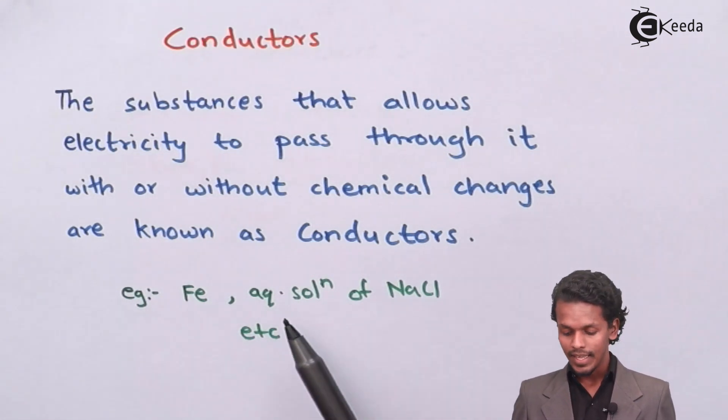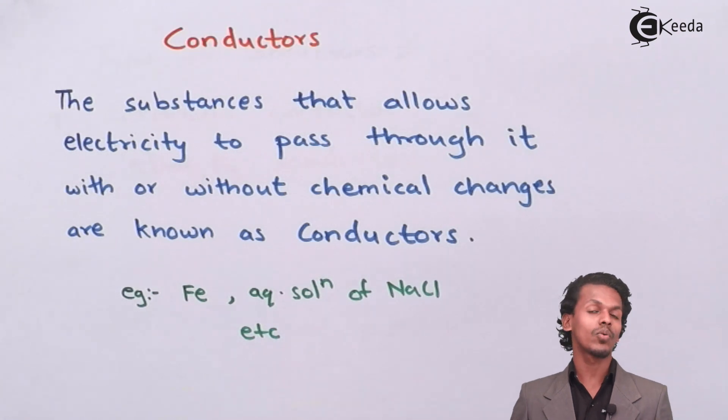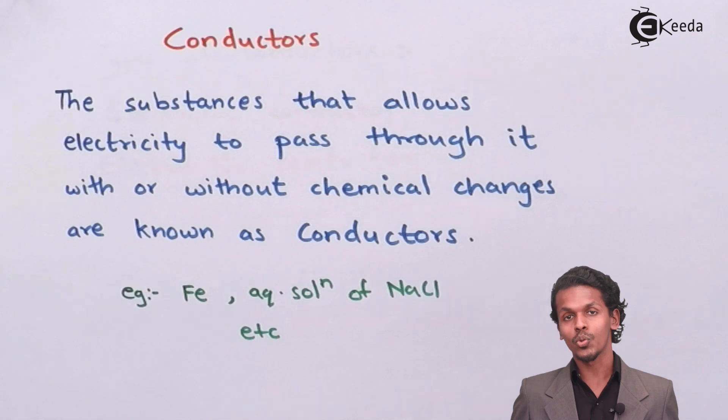For example, Fe, aqueous solution of NaCl etc - all are known as conductors which allow electricity to pass through them.